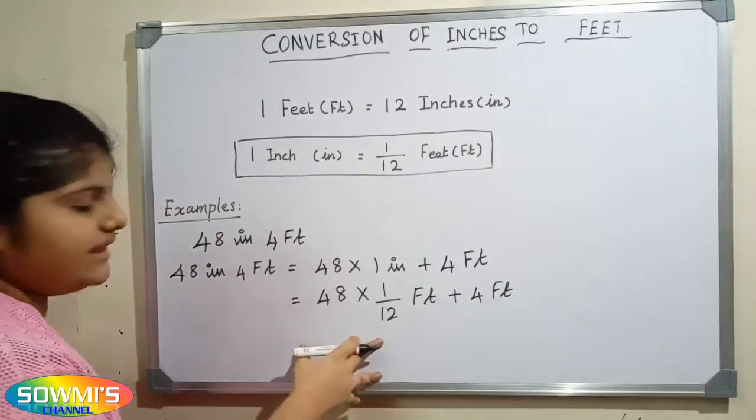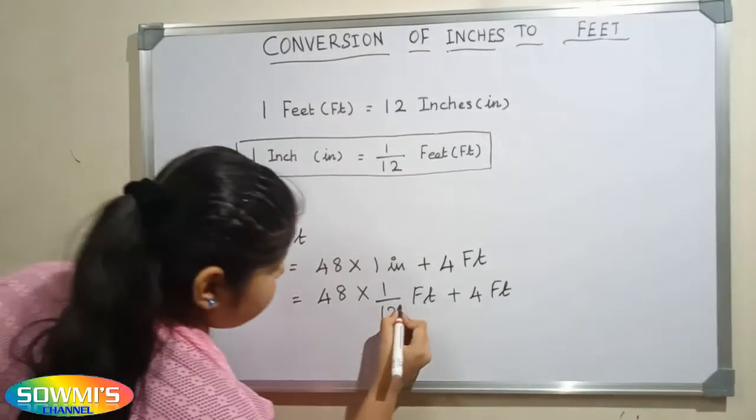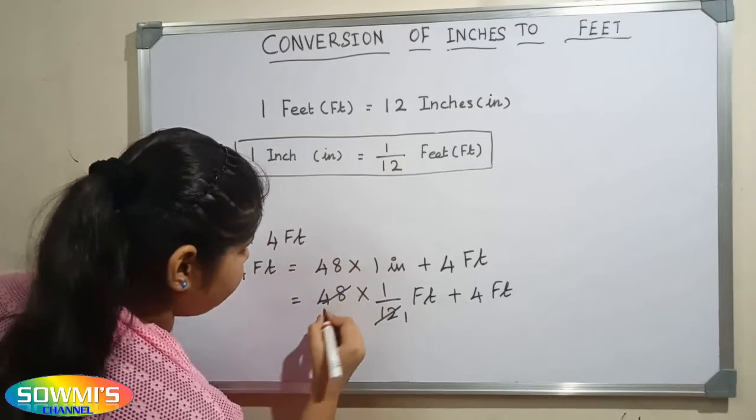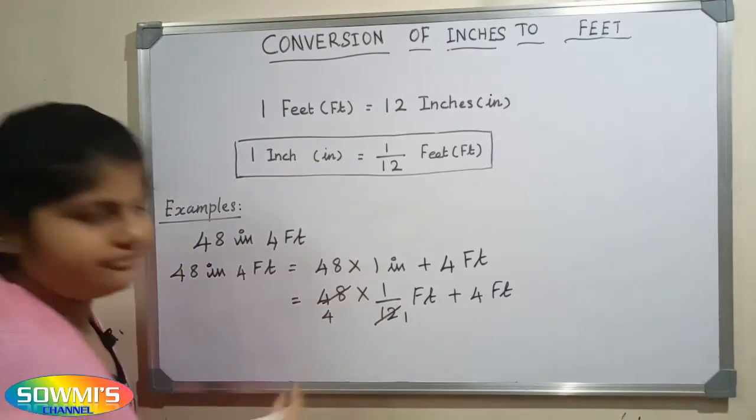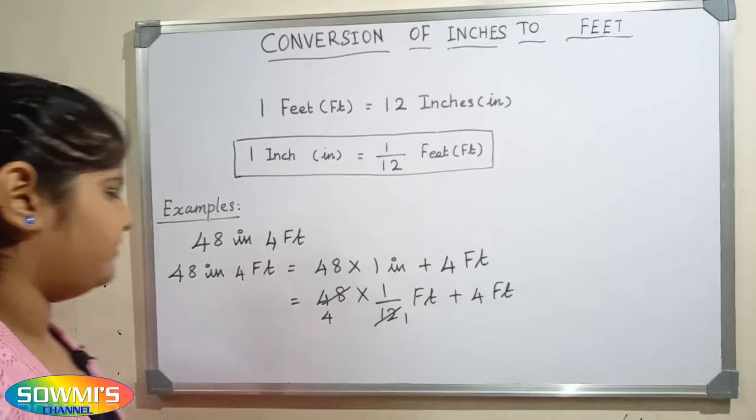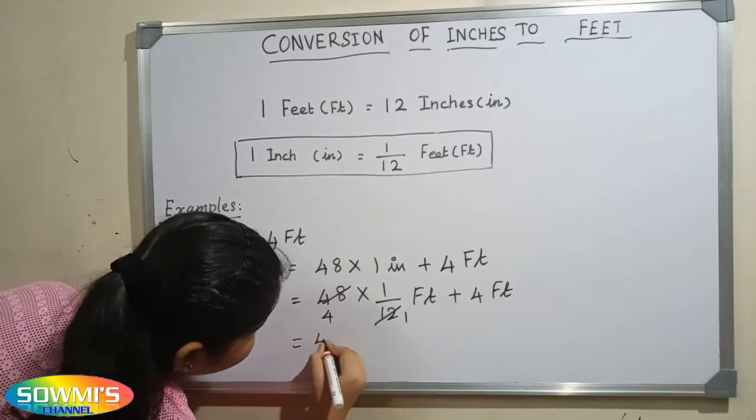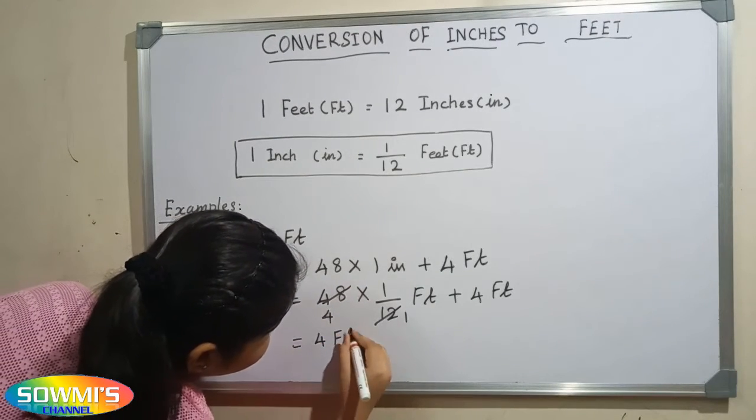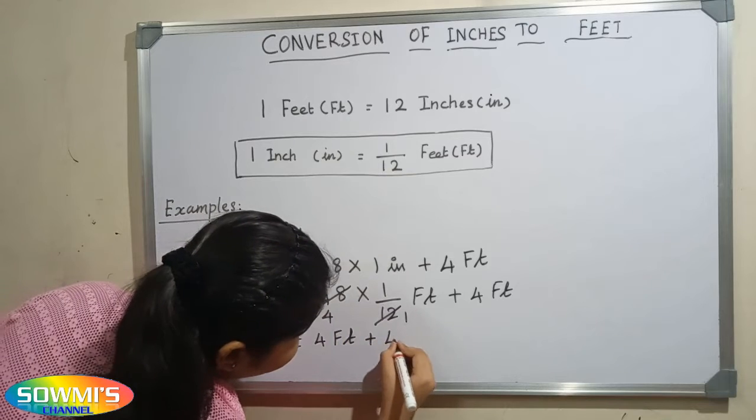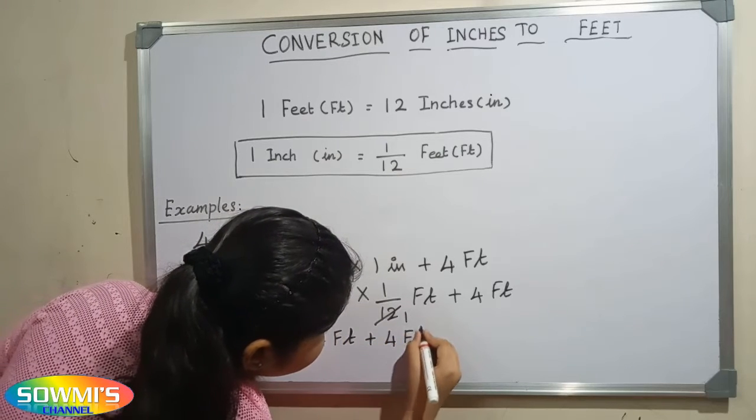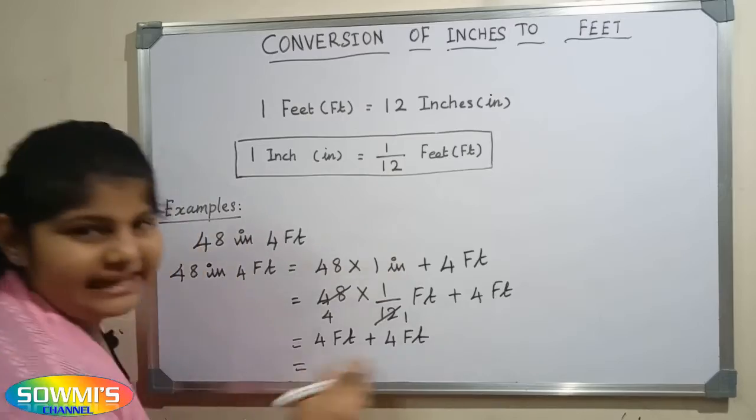Here 12 and 48 get cancelled. 12 fours are 48, so 4 feet plus 4 feet is equal to 8 feet.